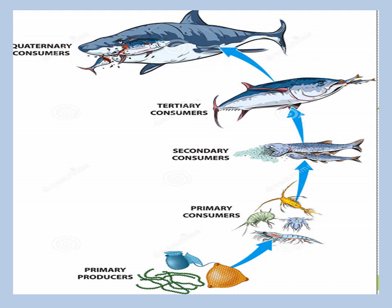Here again we have a food chain existing in an aquatic habitat. In this case we can see that the primary producers are some phytoplanktons which act as the food for some primary consumers which could be some planktons or shrimps. These shrimps are acting as the food for the secondary consumers which could be a small fish. This small fish is further being eaten up by a large fish that is a tertiary consumer. And ultimately, this large fish is being eaten up by a shark or a whale which is acting as a quaternary consumer. So, here again in this aquatic habitat, we can see that the plants are acting as the primary producers and the big animal is the quaternary consumer, and hence a food chain is being formed.